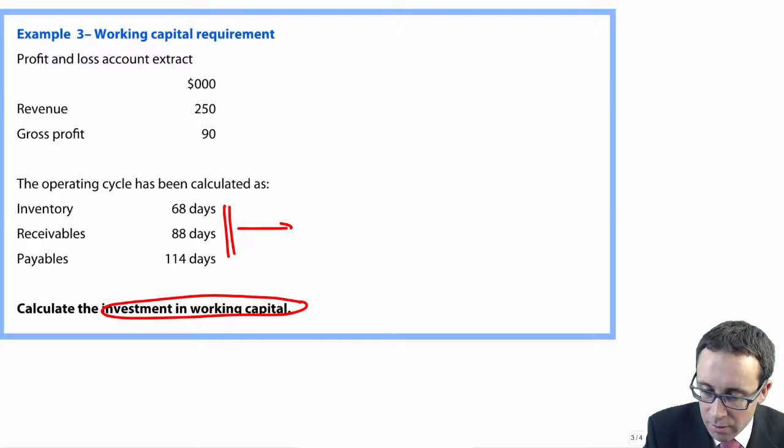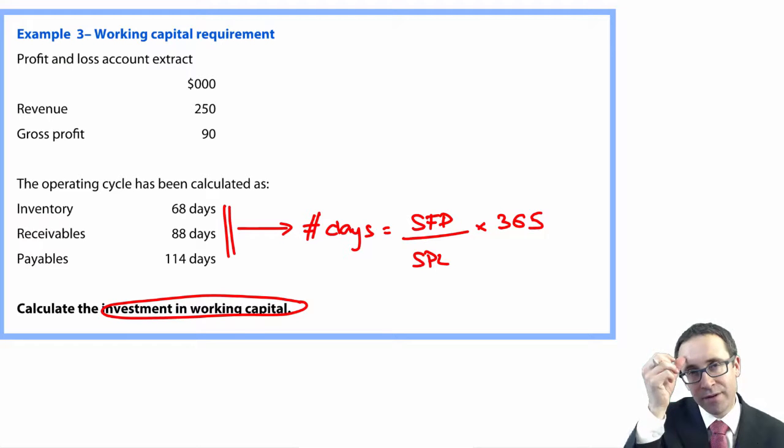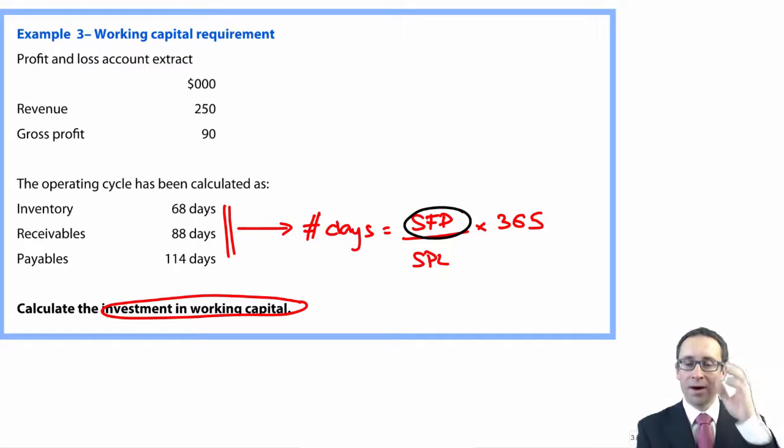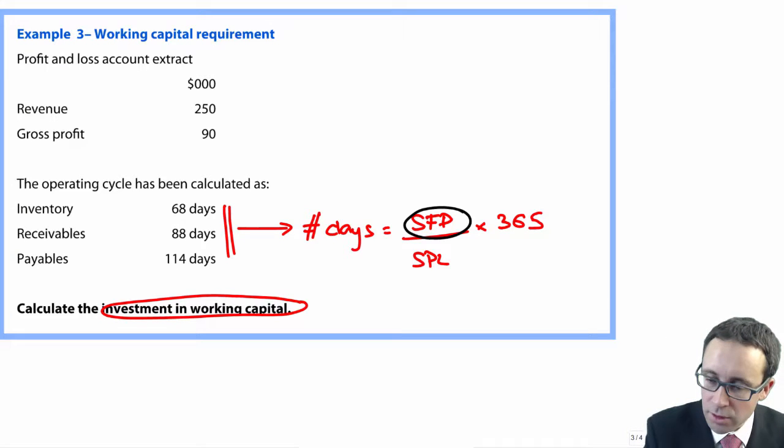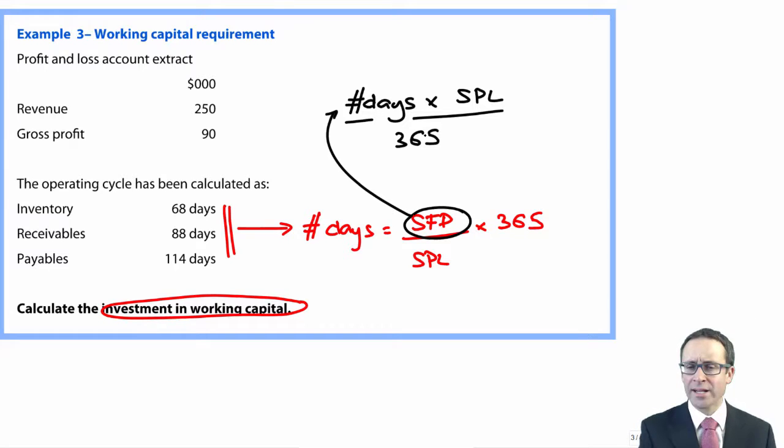What you're given is the operating cycle figures in terms of the number of days. And we know that the number of days that you calculate is the statement of financial position figure divided by profit or loss multiplied by 365. Here, what we're looking at is to find out the amount of working capital invested in the statement of financial position.